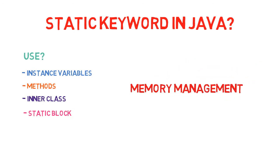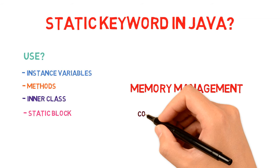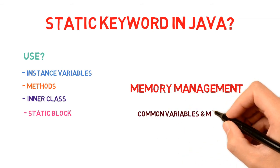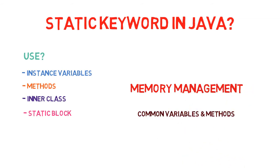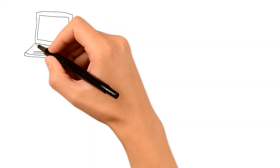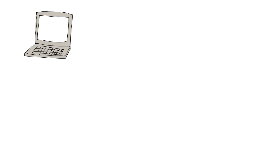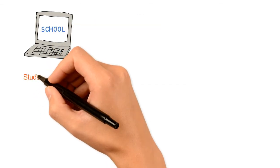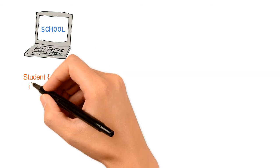Static basically comes into picture for memory management. Whenever you have something that is common throughout the program, we make it static. To understand this, let's take an example. Suppose we have a software for a school and we have a Student class.